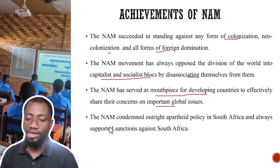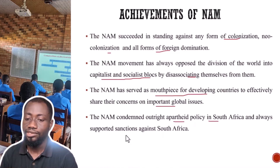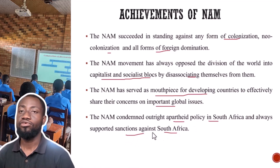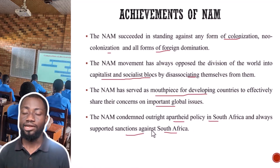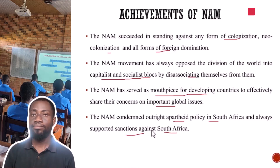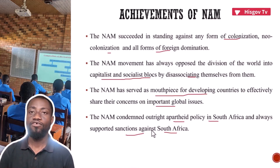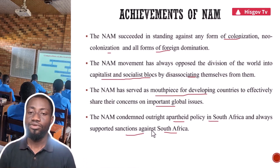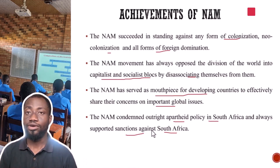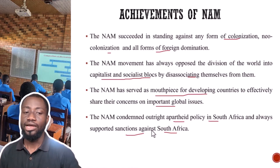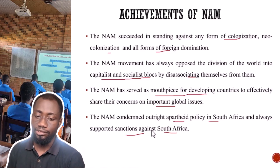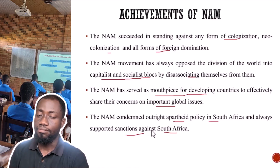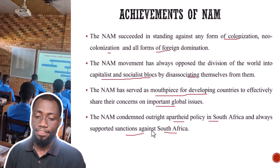The NAM also condemned outright the apartheid policy in South Africa and always supported sanctions against South Africa. During the apartheid system and the discrimination in South Africa during the colonial period, NAM stood in support of the majority South Africans who were demanding independence and democracy, and supported every sanction levelled against minority-ruled South Africa.